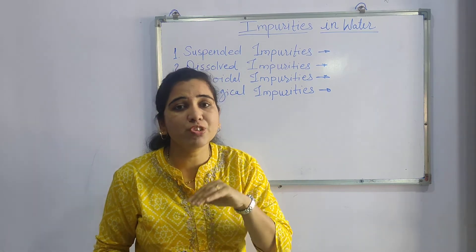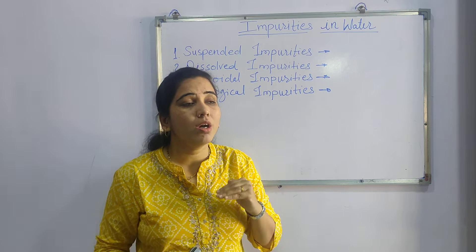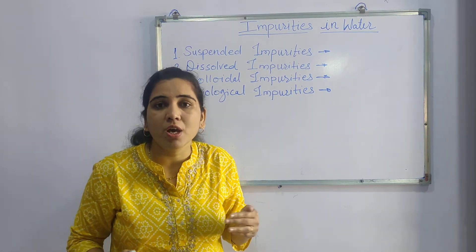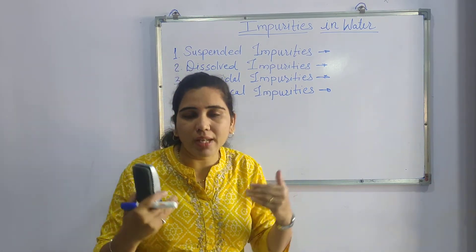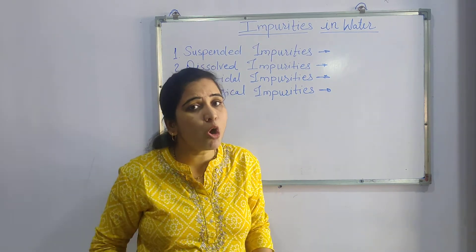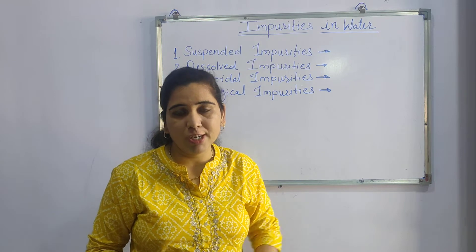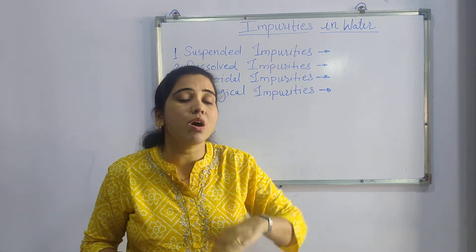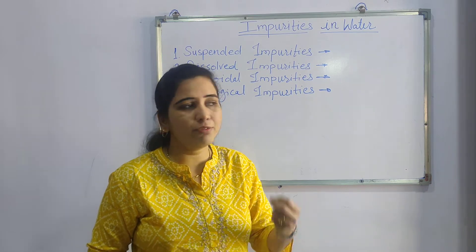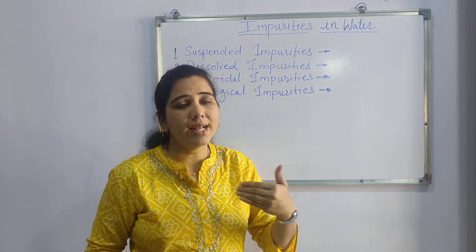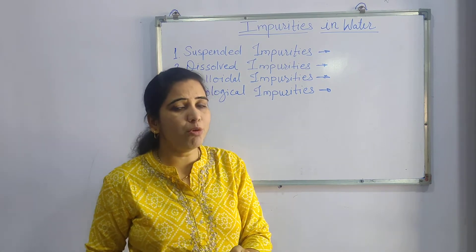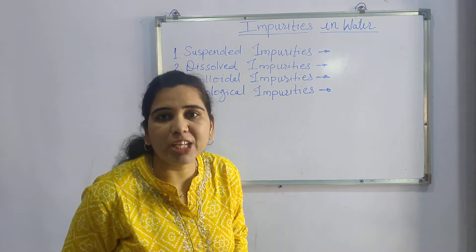The second important source is underground water. How does it form? It rains, water falls on the surface and is absorbed by the earth's surface. The soil or earth crust, which is the uppermost portion of the earth, absorbs the rainwater that falls on the ground. So rainwater is the purest form of water found in nature.